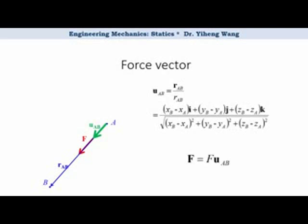Therefore, vector F equals to its magnitude multiplied by the unit vector u_AB. Please note, just like the number 1, unit vectors are dimensionless,